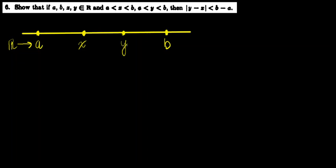And we don't know that X is strictly less than Y, or vice versa — we don't know that Y is strictly less than X. But what we do know for sure is that they're in between A and B. We know that for sure.